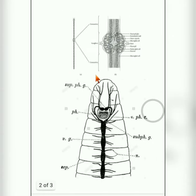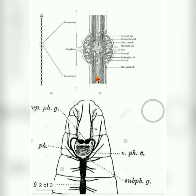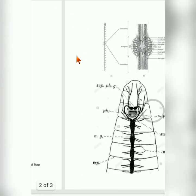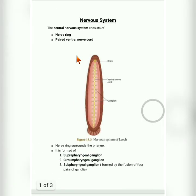You can see this picture — a ganglion is nothing but a cluster of nerve cells, also called neurons. Many neurons come together to form one ganglion. These ganglions together form the central nervous system. In the nerve ring, it is made up of three types of ganglion.